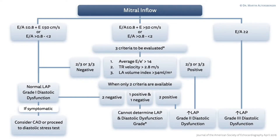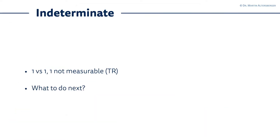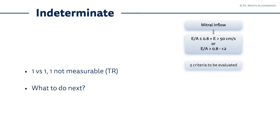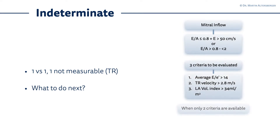In the last videos we discussed diastolic dysfunction grade 1, grade 2, and grade 3. It is time now to move on to the specific situation where you find that diastolic dysfunction is indeterminate. What does it mean, and how does it look like in the chart of the guidelines? It is the situation when you have one criteria which is positive and one criteria which is negative.